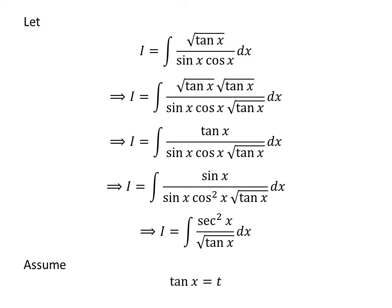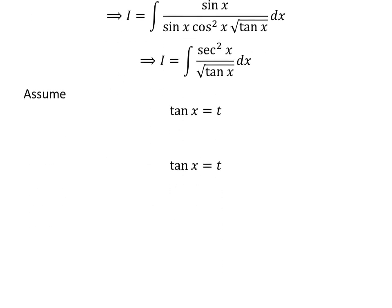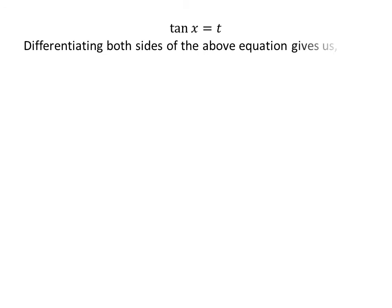We will solve the integral by application of the substitution method. Let us assume tangent of x is equal to t. Let us find the value of differential of t. Taking the differential of both sides gives us the derivative of tangent of x with respect to x times differential of x is equal to differential of t. We know the derivative of tangent of x is square of secant of x.